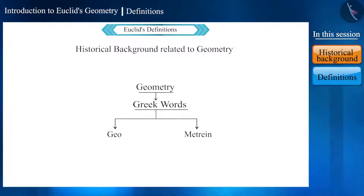Geo means earth or land and metrein means to measure. From this, it seems that the word geometry originated due to the need to measure land.